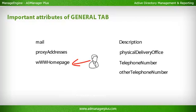www/Homepage: Stores the address of the web page of the user or a web page that is related to the user. URL: Stores the list of websites that are related to the user.